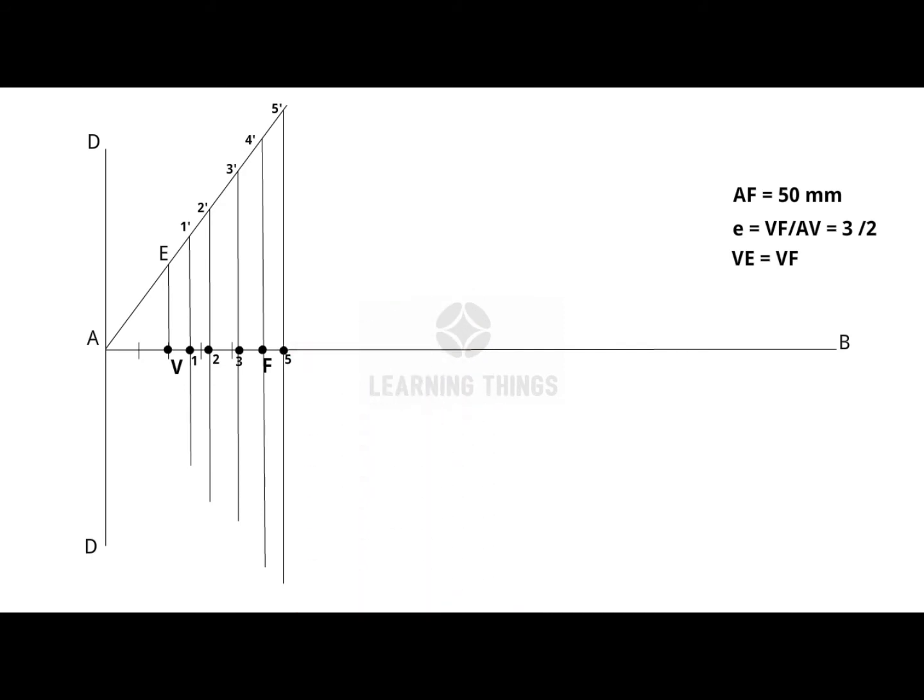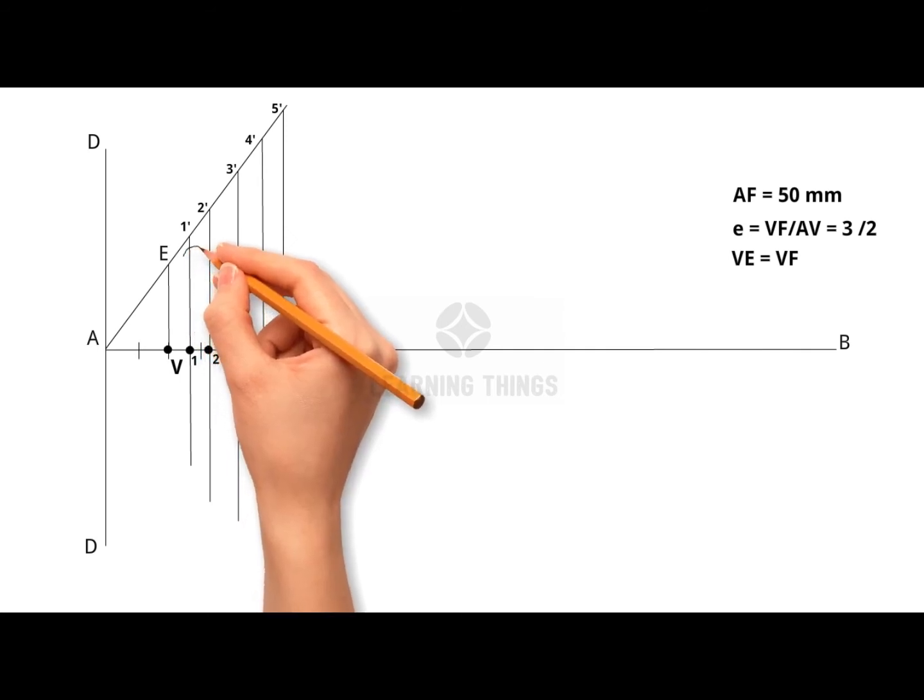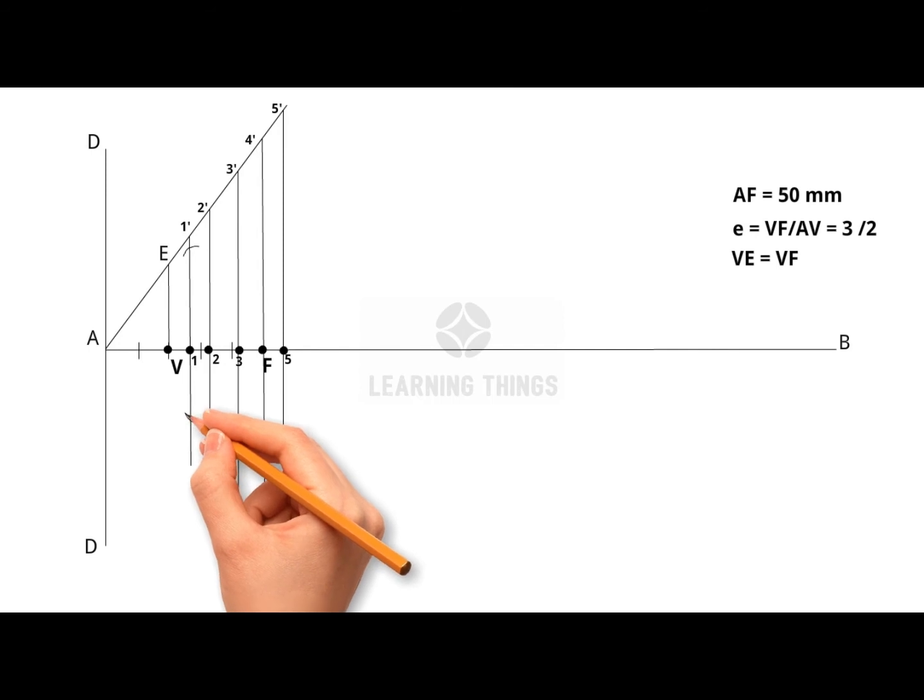Step 9. With center F and radius 1 to 1 dash, draw arcs intersecting the line 1 to 1 dash through 1 at P1 and P1 dash as shown. P1 and P1 dash are the points on the hyperbola. Do the same for remaining arcs.